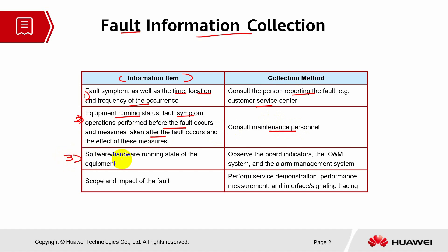The third part of information we need is the software and hardware running state of the equipment. We have to observe the board indicators on site, the OMM system, and the alarm management system. The last category is related to the scope and impact of the fault. For this purpose, we can perform service demonstrations, performance measurements to measure KPI counters, and interface signaling tracing to ensure that the signaling works fine.